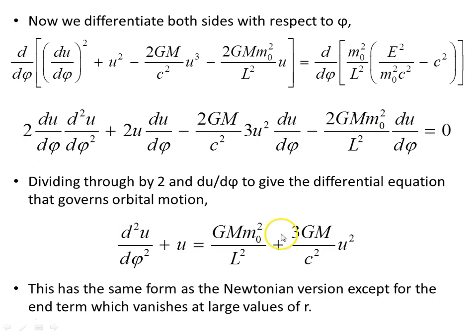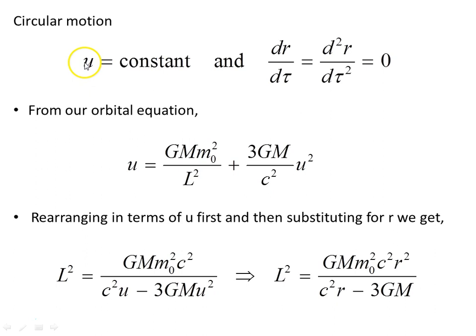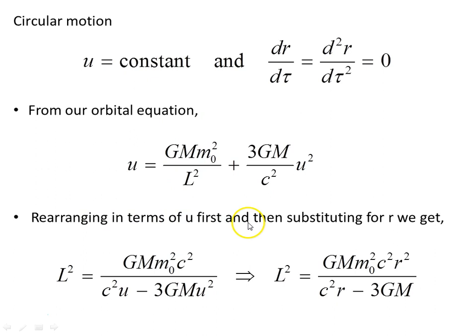For circular motion, u = 1/r is constant because r is constant — that's the nature of a circle with constant radius all the way around. So dR/d-tau will be zero and the second derivative of r with respect to d-tau will be zero as well. From our orbital equation, the second derivative term disappears, and we're left with just this object. Rearranging in terms of u and then substituting for r, and solving for L squared — the square of the angular momentum — we get this object, remembering that u is constant. So this is the value of our angular momentum, and substituting back 1/r for u gives us the angular momentum for a given radius.